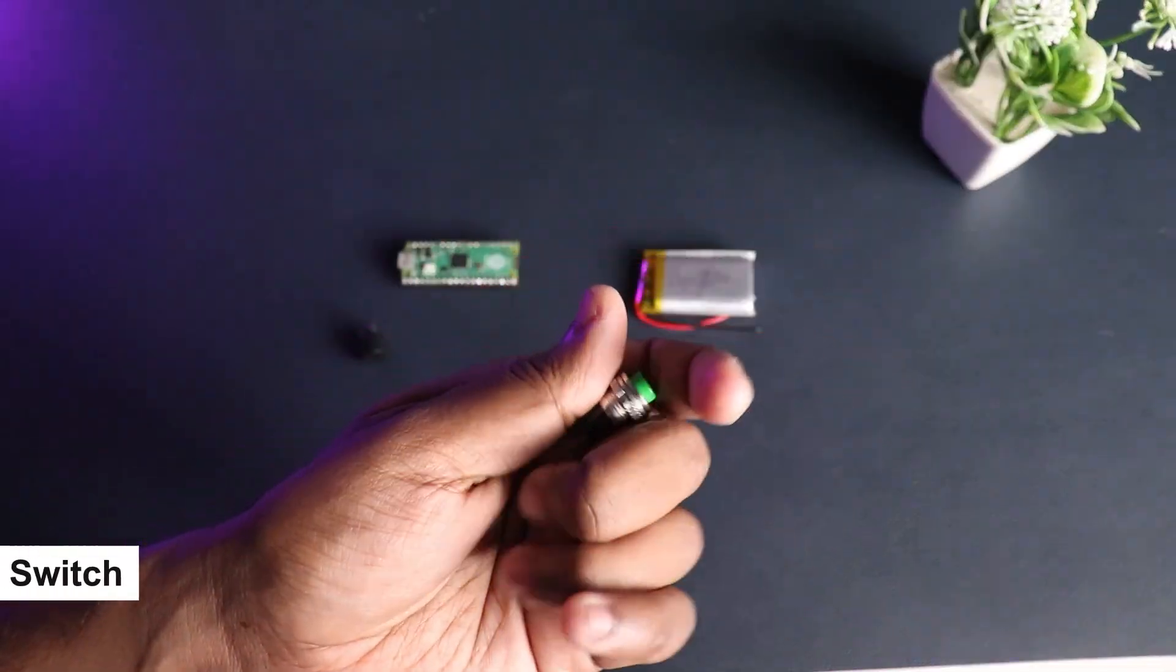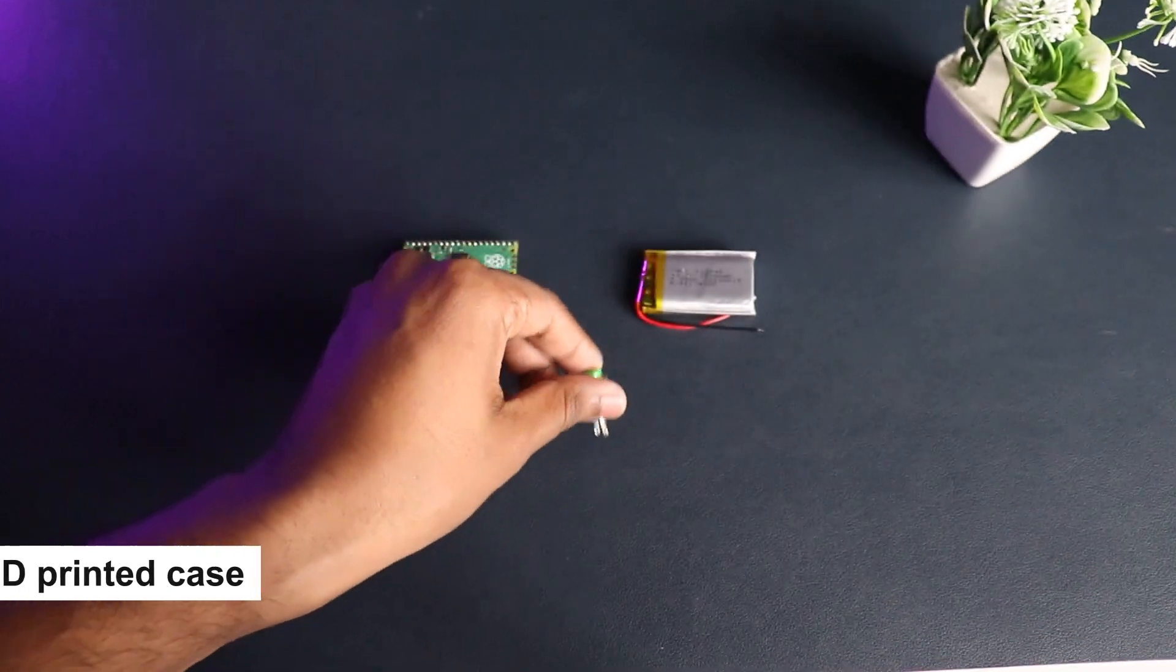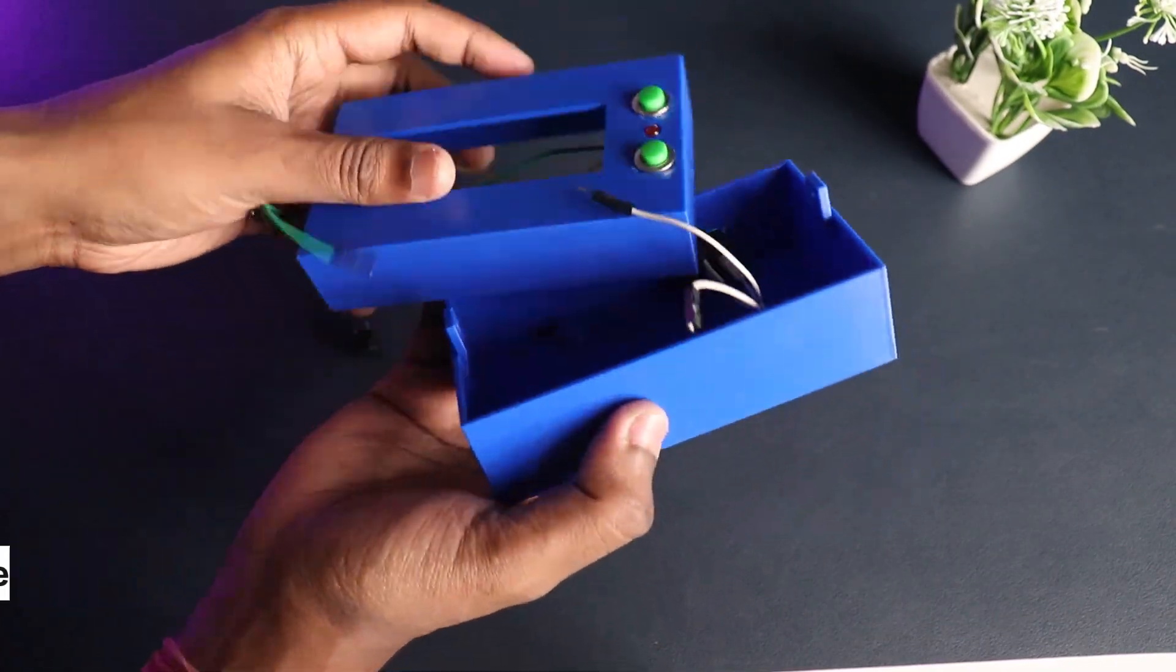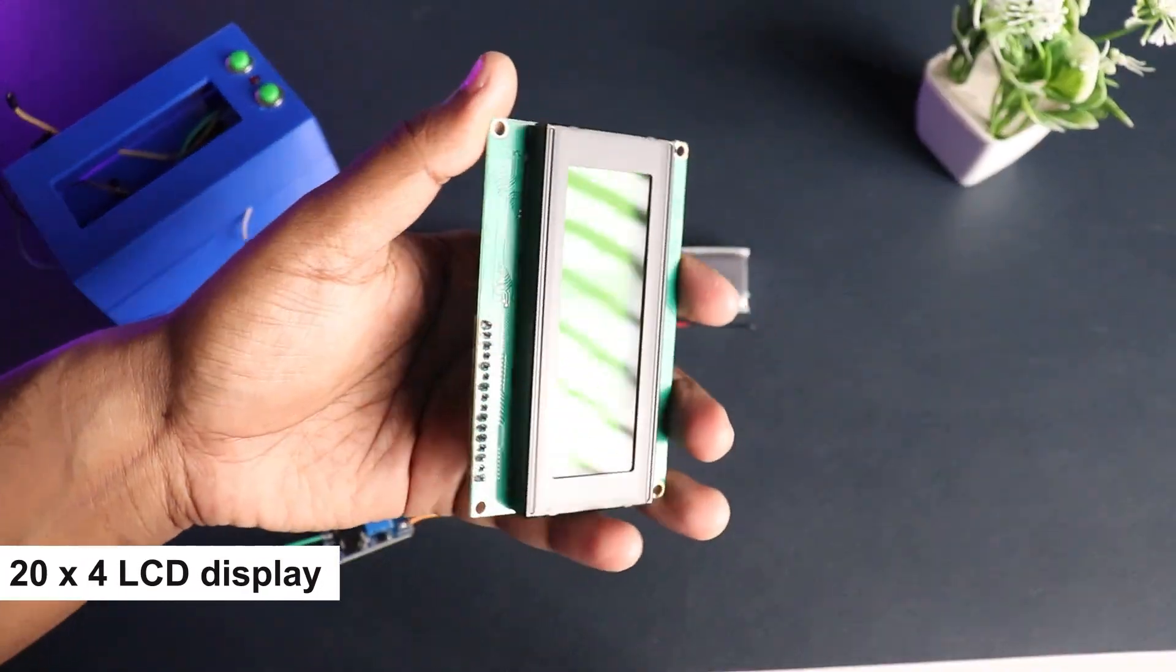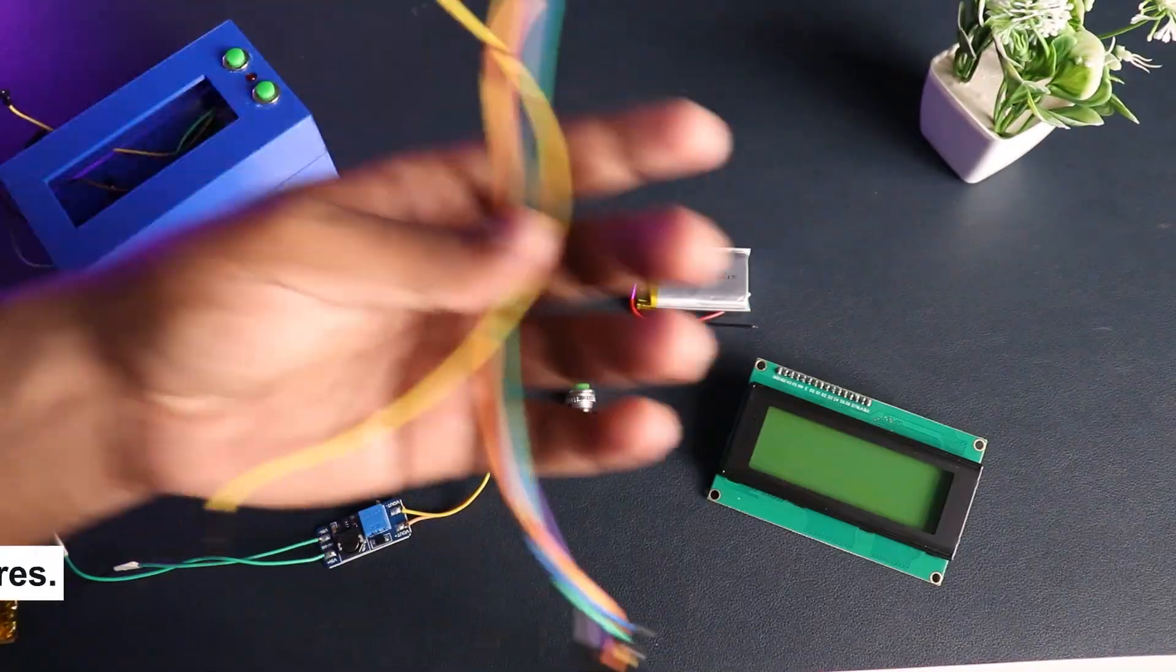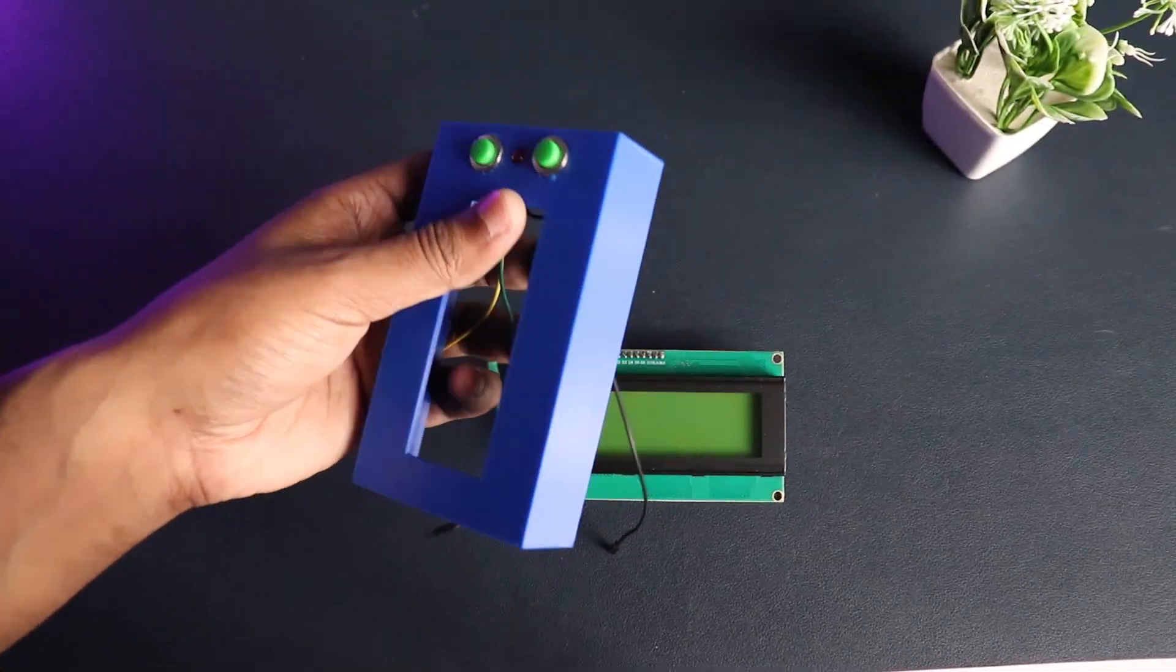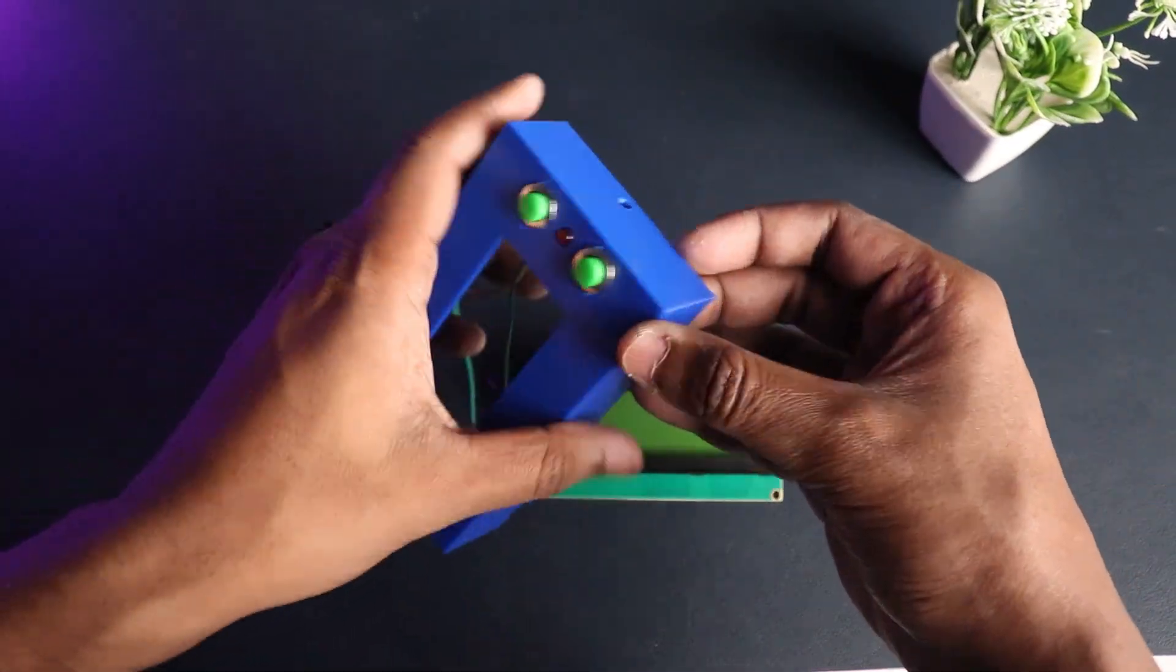a buzzer, a switch, a 3D printed case, a boost converter to boost the battery voltage, a 20 by 4 LCD display, and a few jumper wires. Moving on to the display assembly, as you can see here we have